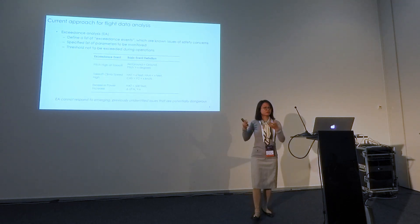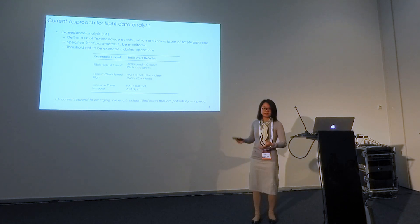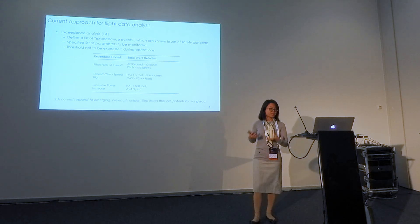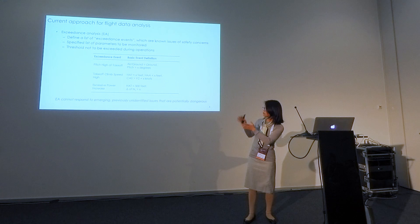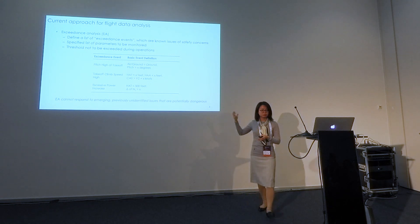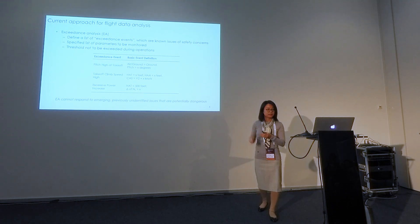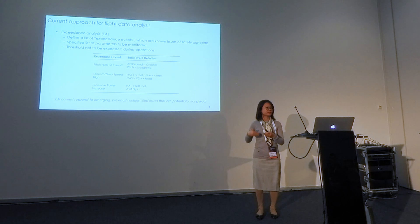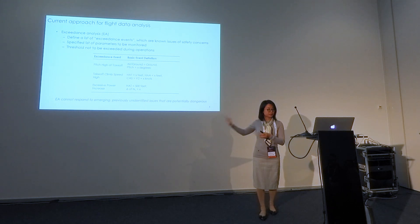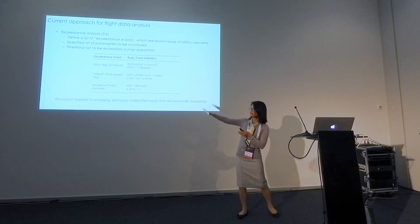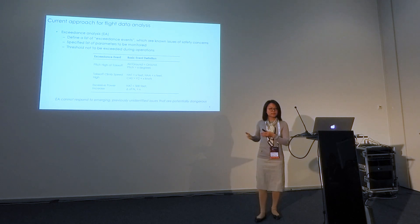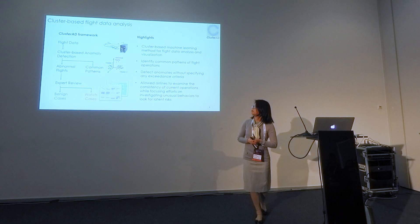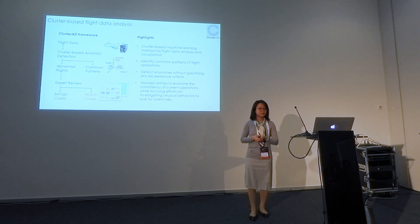The current approach used at airlines is basically accident detection or accident analysis. You define a list of events you believe are unsafe, then specify which parameters and thresholds to monitor. For each different type of aircraft, and even each airline, they can adjust those parameters according to their own needs. This method is accurate and effective, but the downside is you cannot respond to any emerging risks — anything not already in the list cannot be detected.